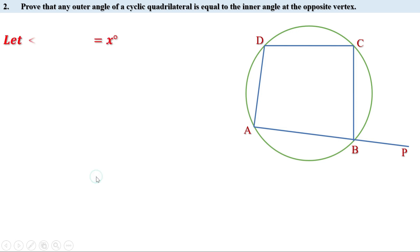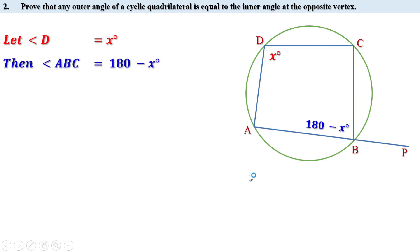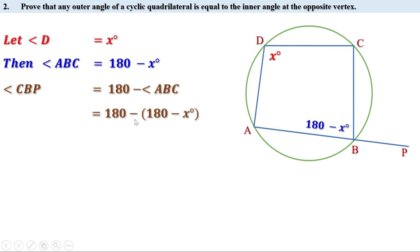Let angle D be x degrees. We know ABCD is a cyclic quadrilateral, therefore the opposite angles are supplementary. Hence angle B equals 180 minus x degrees, that is angle ABC is 180 minus x degrees. Now these two angles are in a linear pair, therefore their sum is 180 degrees. Therefore angle CBP equals 180 minus angle ABC. Since angle ABC is 180 minus x degrees, angle CBP equals 180 minus (180 minus x) degrees. Removing the bracket: 180 minus 180 plus x equals x degrees.